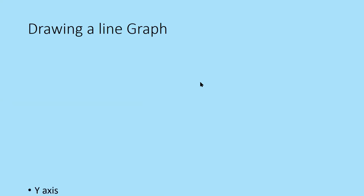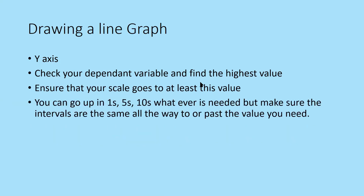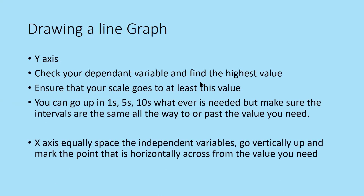For drawing a line graph, here are a few points to write down. On the y-axis: check your dependent variable, find the highest value, ensure your scale goes to at least that value, and go up in equal intervals. This is exactly the same as for a bar chart. On the x-axis: equally space your independent variables. The key difference from a bar chart is that on a line graph you mark a small cross where the values meet, then join the crosses with a line, rather than drawing full bars. Pause to write this down.